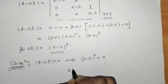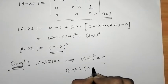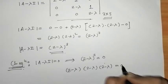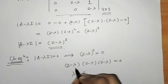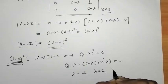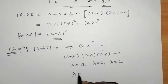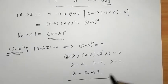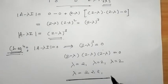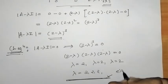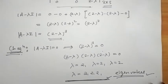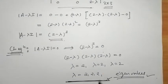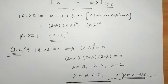On simplification, we get lambda equals 2. The same result holds for each factor, so lambda equals 2, 2, 2. These are the eigenvalues of the given matrix — lambda equals 2 is a repeated eigenvalue. Now we have to find the eigenvectors.